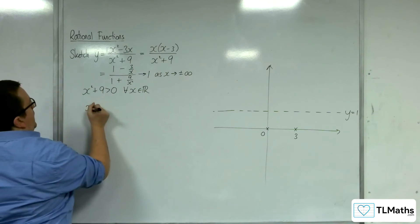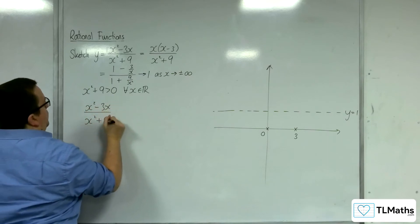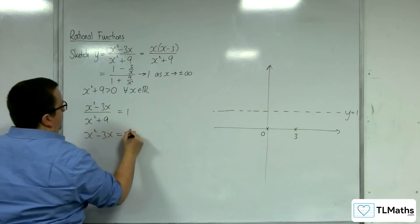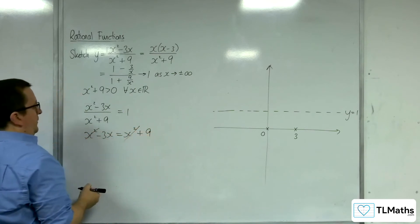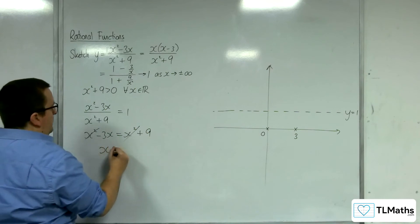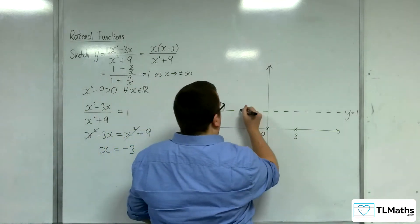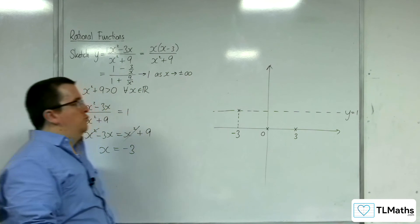So if I put (x² - 3x)/(x² + 9) equal to 1 and multiply up, we can subtract the x² from both sides, divide through by minus 3, and we get x is equal to minus 3. So we're crossing through the horizontal asymptote at minus 3.